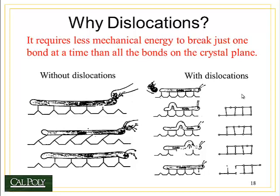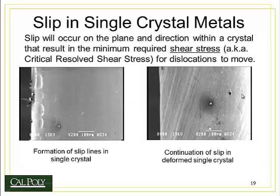You can do something similar with carpet. If you've ever tried to move a large rug, you'll notice it's incredibly heavy and there's a lot of friction between the floor and the rug, making it difficult to move. But if you create a small bump in the rug and kick that bump along, you can move the rug small distances with very little effort. That's the same thing as a dislocation moving through a metal.